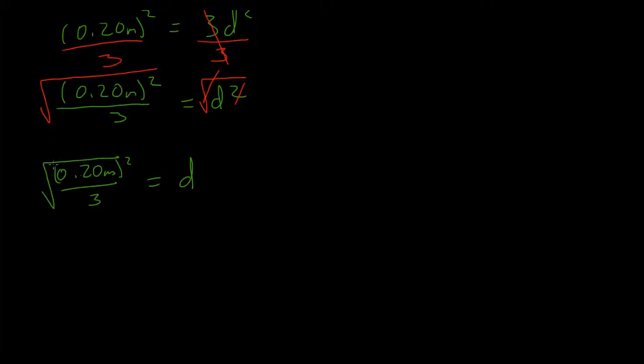So in the numerator, the square root will cancel the square and we'll just get 0.20 meters. And then in the bottom, I'll still have the square root of 3 and the denominator equals D.